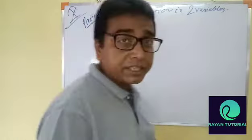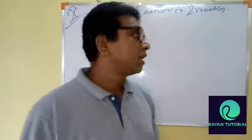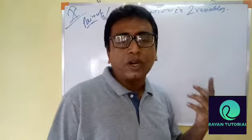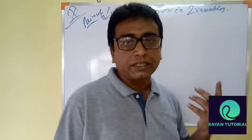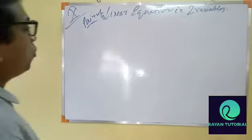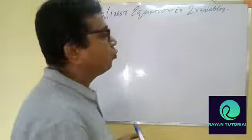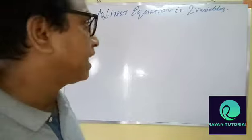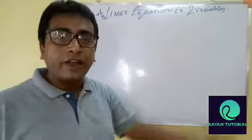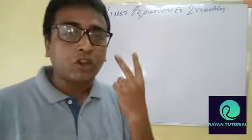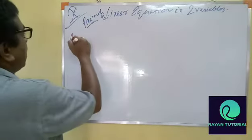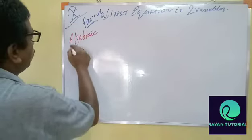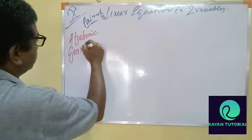Why pair of linear equations? There will be two equations and there will be two variables. By now I suppose you know what are the variables and what are the constants. Now, this linear equation in two variables — we need to solve it. Any linear equation in two variables, we know there are two methods: one is algebraic method and one is geometric method.